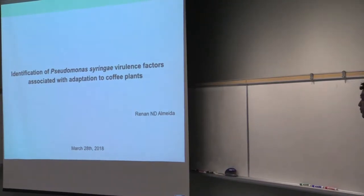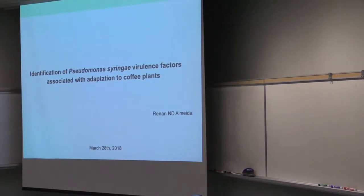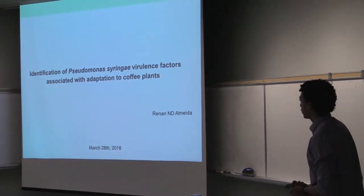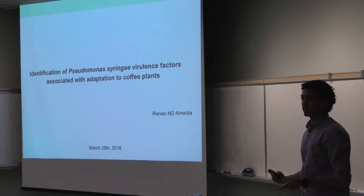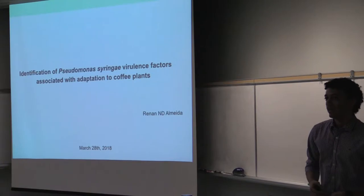Good afternoon everyone, my name is Renan, I'm from David Guttner's lab here at the University of Toronto. I've always been interested in this idea that you can actually predict a particular phenotype of interest just based on the specific types of DNA sequence that you have in different genomes.